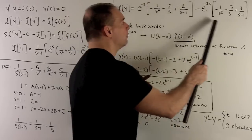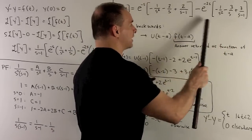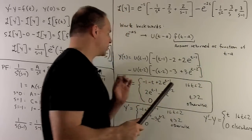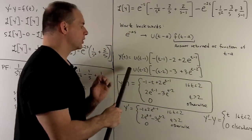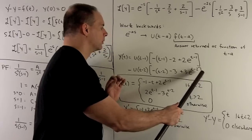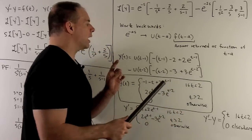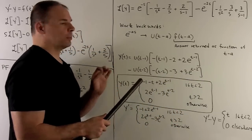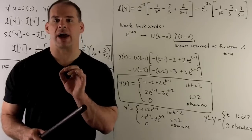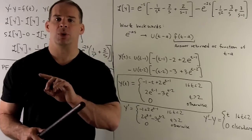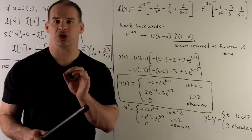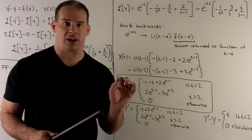For the second group the shift is by a equal to two, so we work out the same idea with the correction e to the minus two s. We were given a piecewise function to start, so we should express the final answer as a piecewise function.